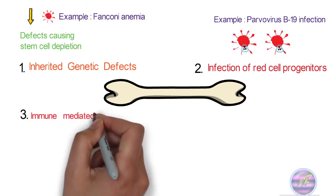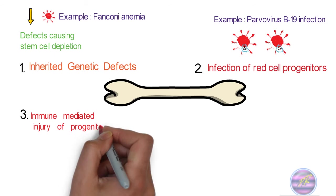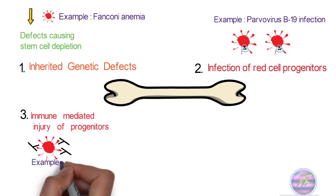The third cause is immune-mediated injury of progenitors in the marrow. Examples are aplastic anemia or pure red cell aplasia.